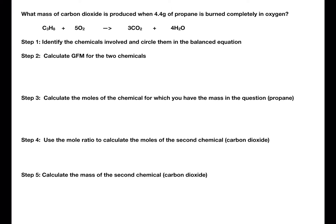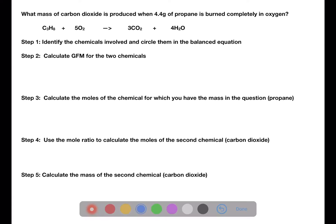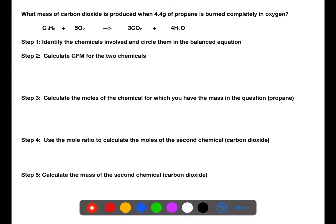To be able to do these calculations you need to be able to calculate gram formula mass and moles. The first step in the calculations is to identify the chemicals that are involved by reading the question carefully. We're going to circle these chemicals in the balanced equation.